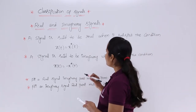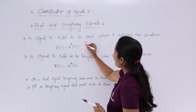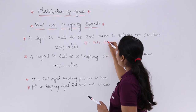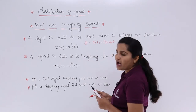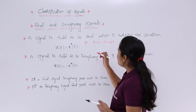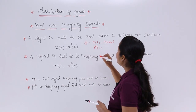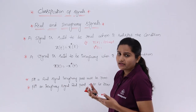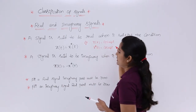For example, consider x(t) = cos(ω₀t). If this is our signal, how can we say this is a real or imaginary signal? If you consider x*(t), you are not getting anything different — that means it is equivalent to cos(ω₀t) only.